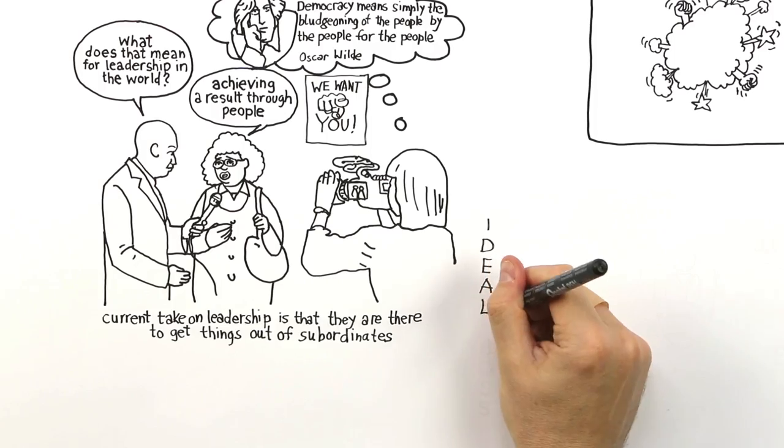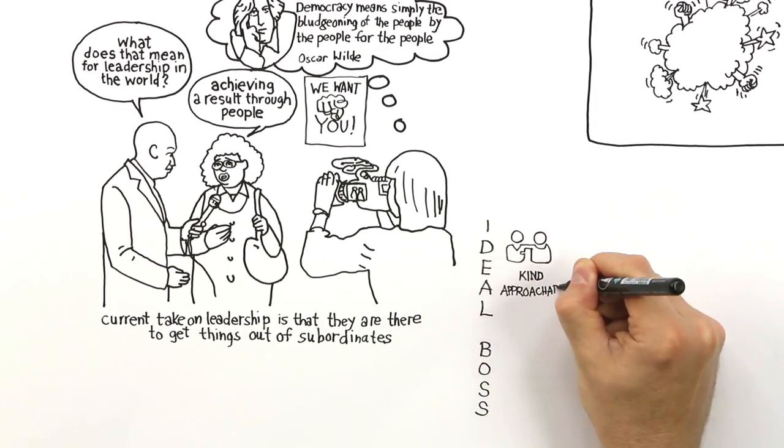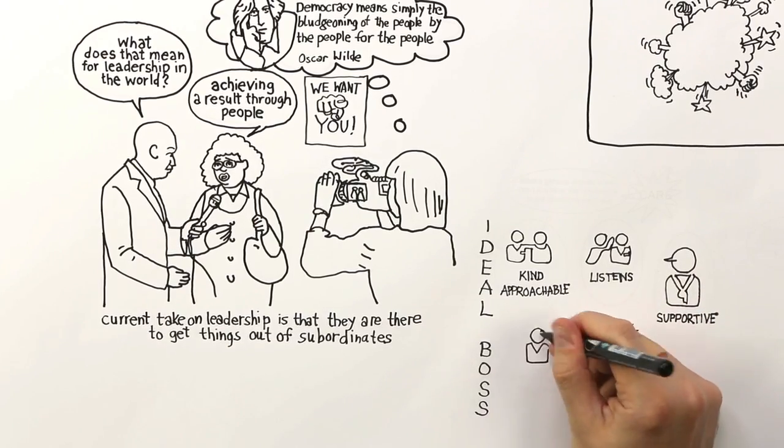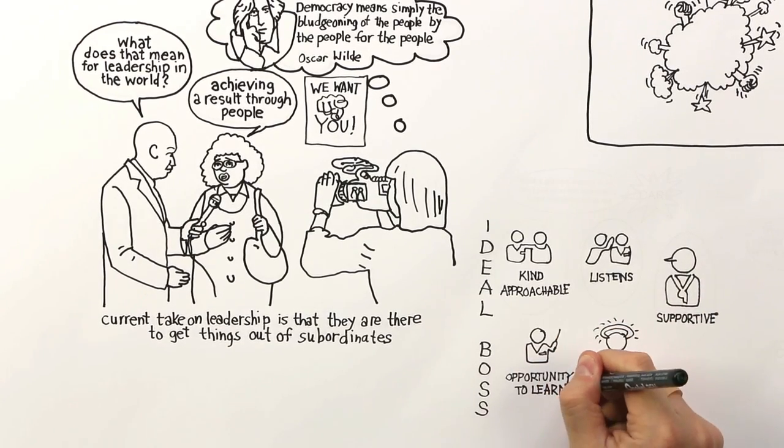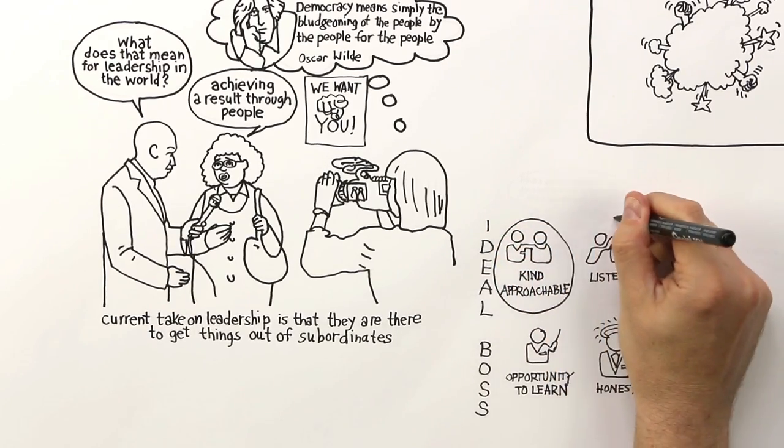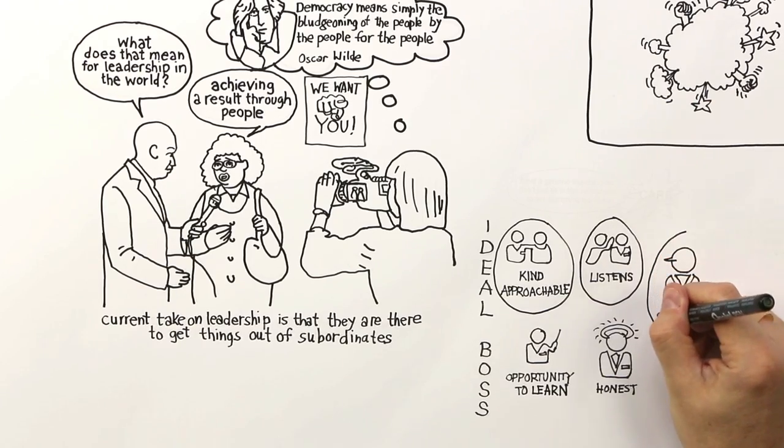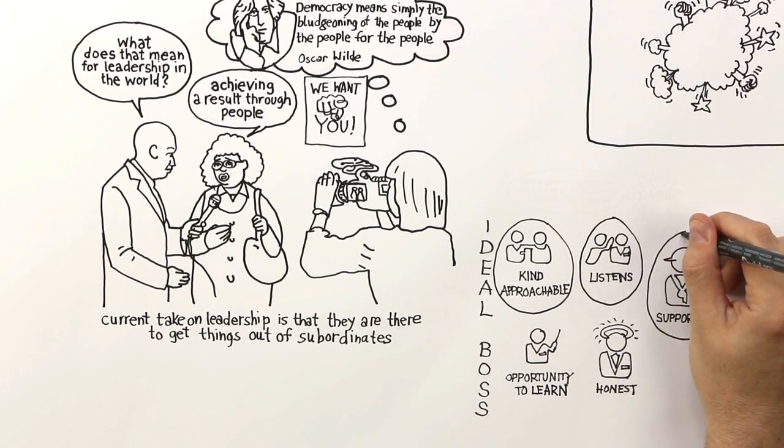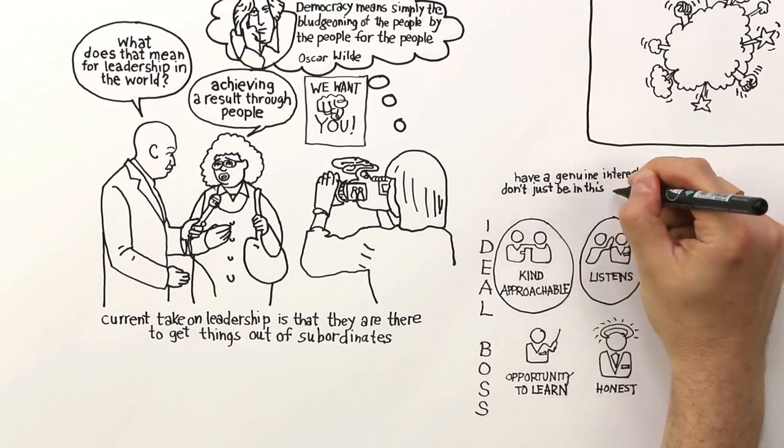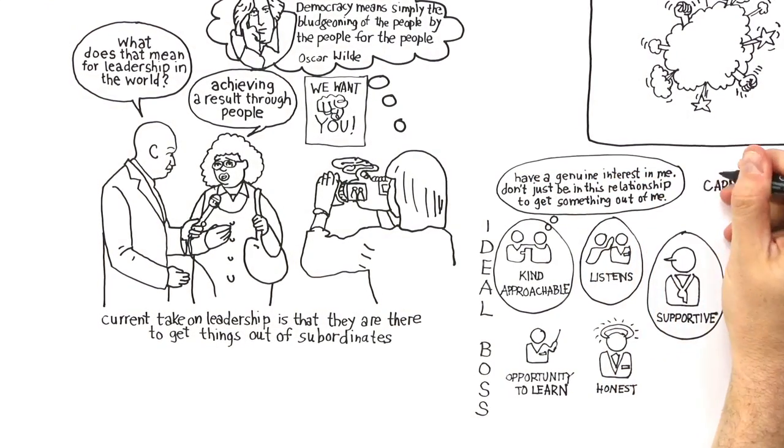If you ask people intuitively to construct an ideal boss, they will say a boss who's kind, who's approachable, who listens, who's supportive, who's honest, who's fair, and who gives me an opportunity to learn. What you get is a huge bag of words. But there are synonyms in that bag, and you can distill them to two core themes. The first is concerned with care. What the subordinate is actually saying to the boss is, have a genuine interest in me, don't just be in this relationship to get something out of me. Care about me.